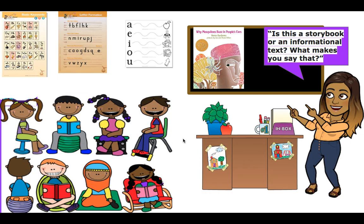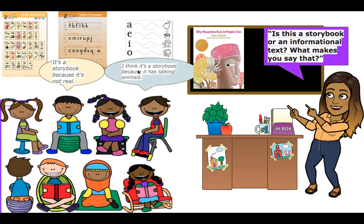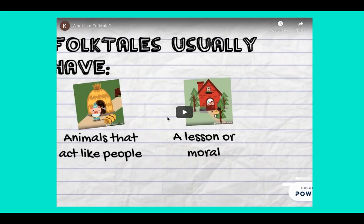In this storybook — is this a storybook or an informational text? And what makes you say that? Think about our book and think about our story. Storybooks are fictional — they're not real. Informational text is real. So what do you guys think this is? Answer at home. It's a storybook because it's not real. I think it's a storybook because it has animals talking. So, my friends, it's not an informational text — it is a storybook.